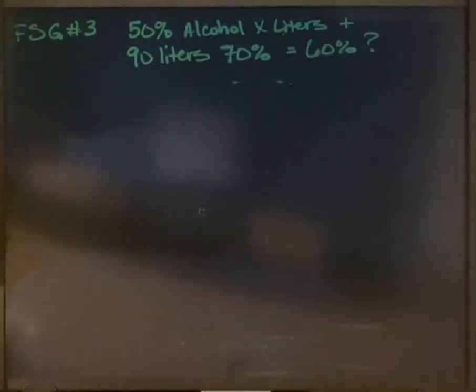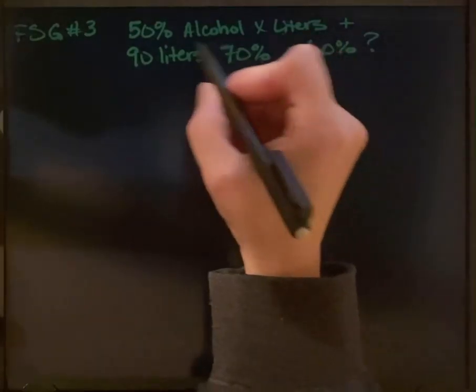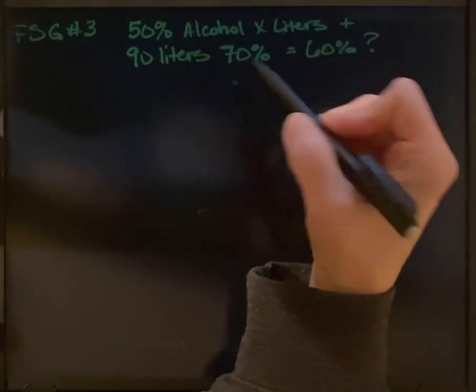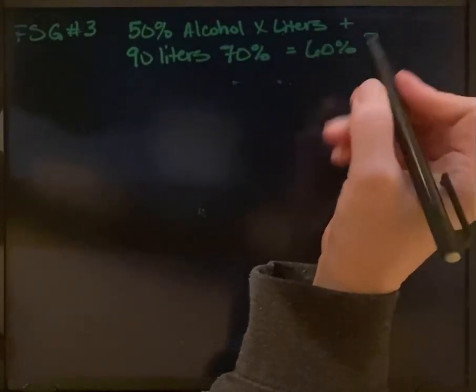This question is asking us how many liters of a 50% solution of alcohol mixed with 90 liters of a 70% alcohol will give us a 60% solution.